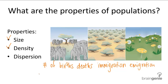Density is the number of individuals per unit area or volume, and the larger the population, the denser it becomes. For example, the number of elephants per square mile, or the number of people per square mile. Clearly there are a lot more people in cities than in the countryside, so it's less dense in the countryside than it would be in the city.